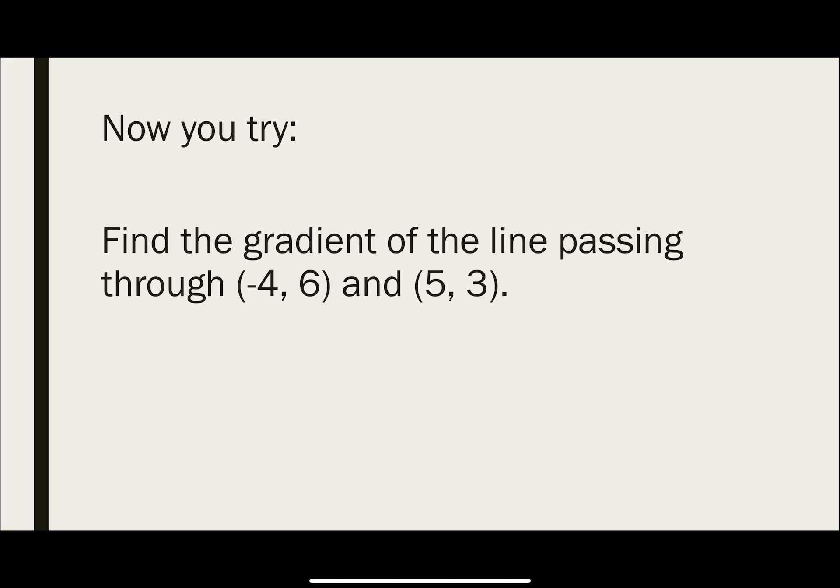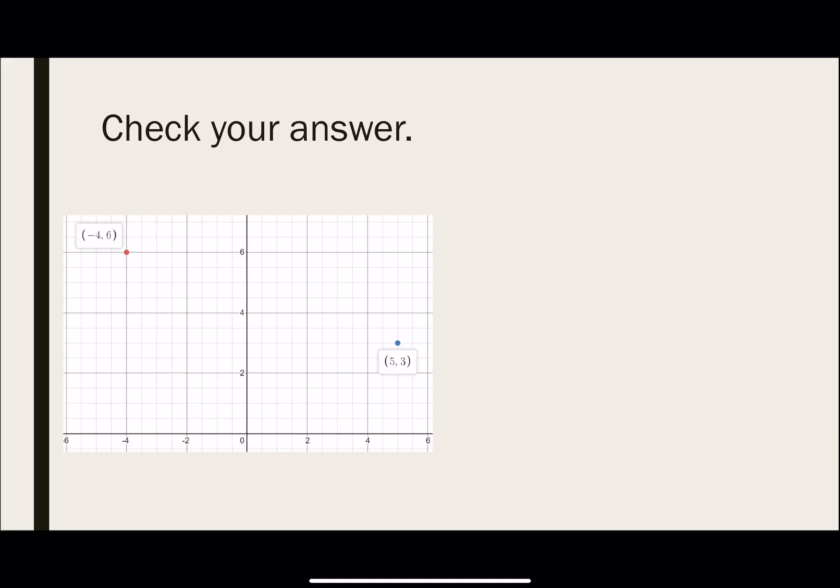So let's try another question on your own. Find the gradient of the line passing through the points (-4, 6) and (5, 3). Pause the video, try it out, and then check your answer. So let's check your answer now. So remember, we could actually plot out the two points. So we have the point (-4, 6) in red, and (5, 3) in blue.